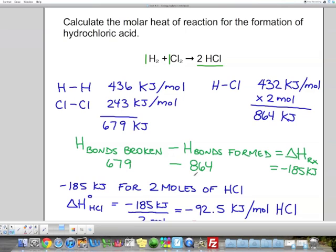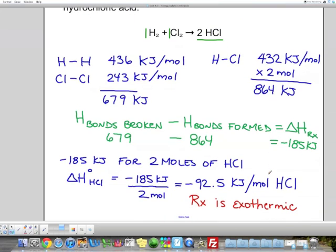So if I do this value minus this value, it gives me for the whole reaction, the change of enthalpy for the reaction is minus 185 kilojoules. Now in this case, it's 185 kilojoules for how many moles of HCl? For two moles, that's what it says in the reaction.